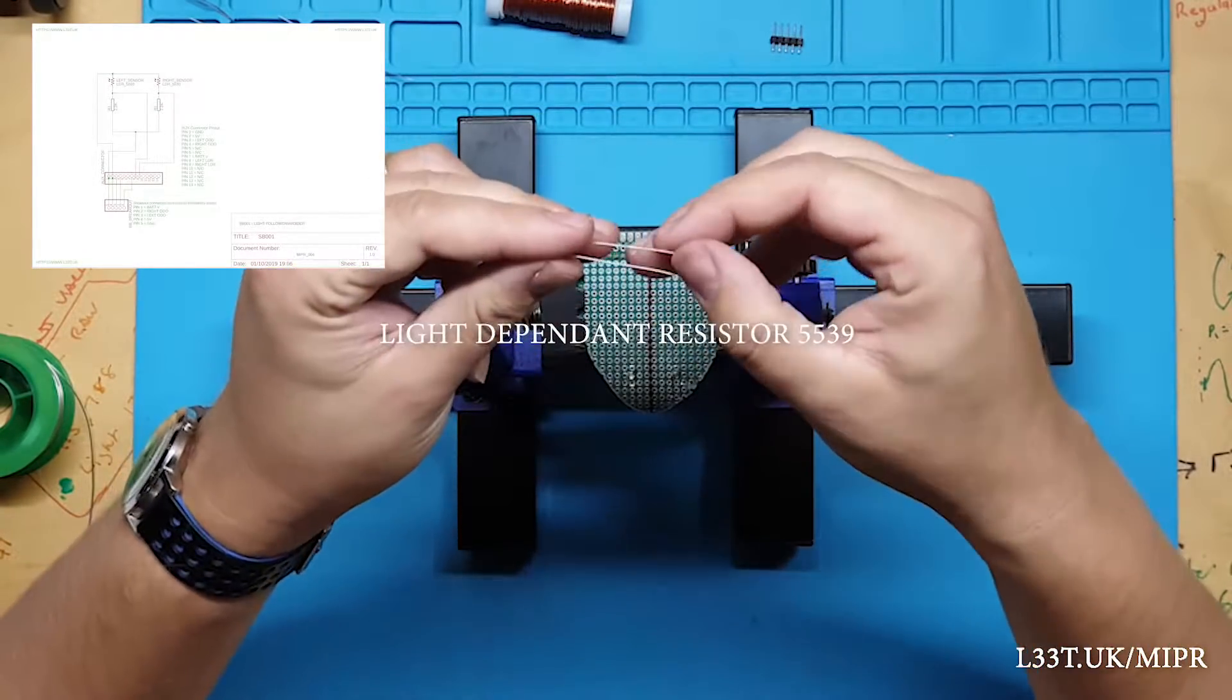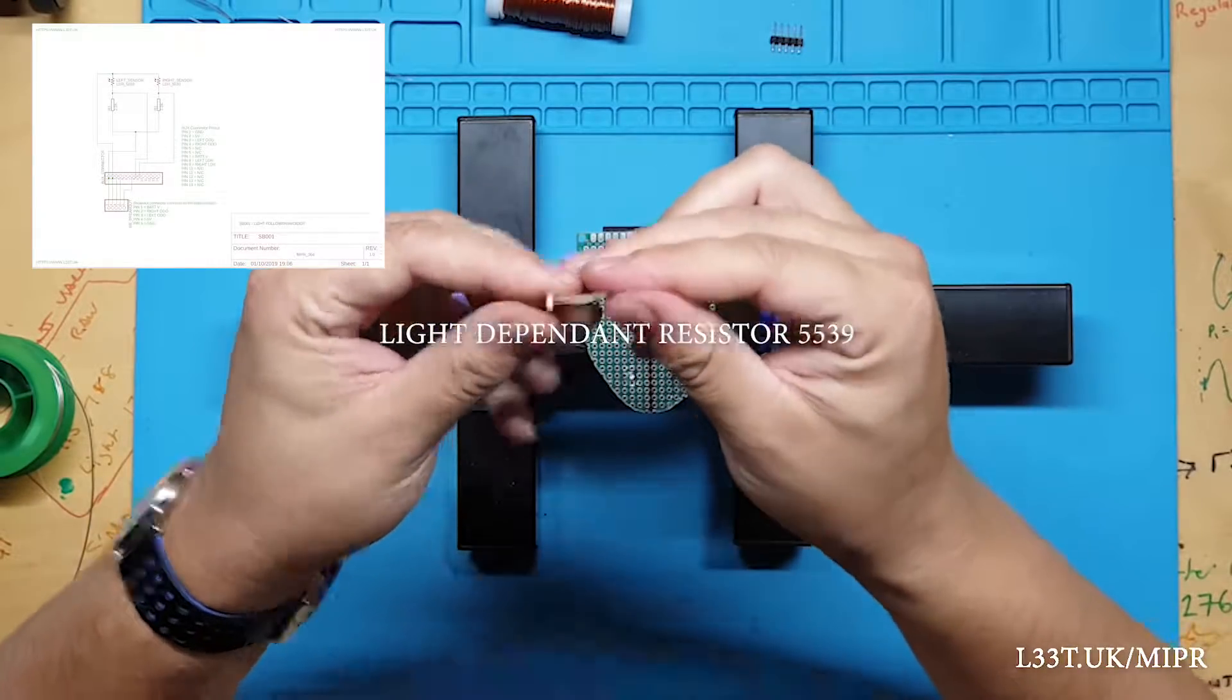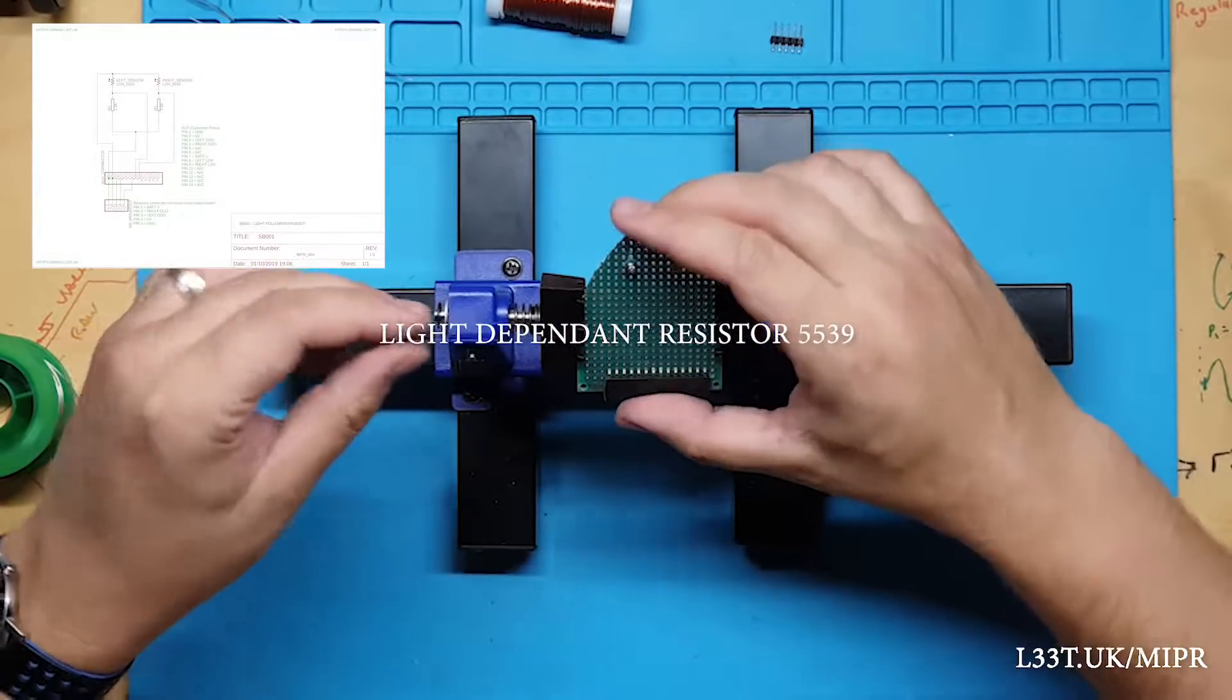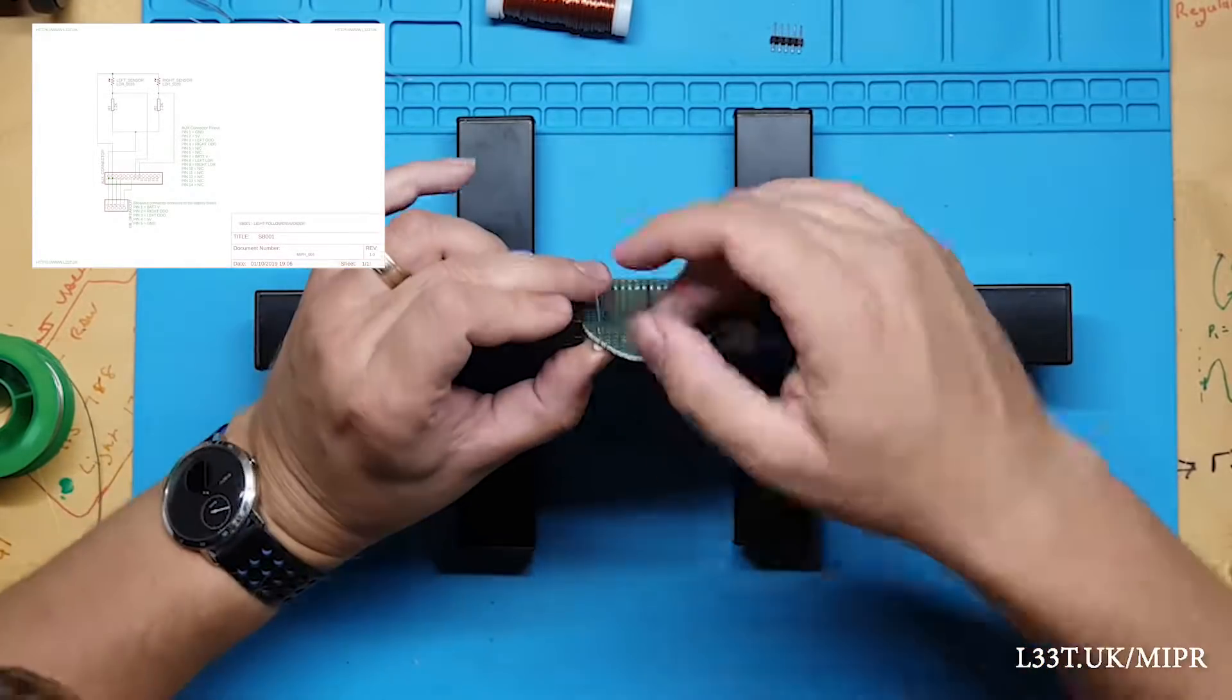Now we will add the light dependent resistors. These will detect the light and vary their resistance in accordance with the light levels detected.